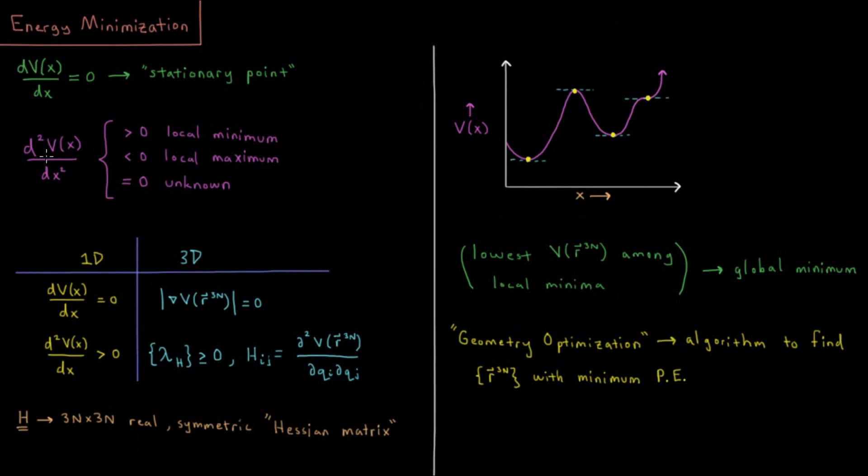So that is what happens in one dimension. But typically in computational chemistry we have molecules or molecular systems. Each atom has an XYZ coordinate and if there are N atoms we have three N coordinates.